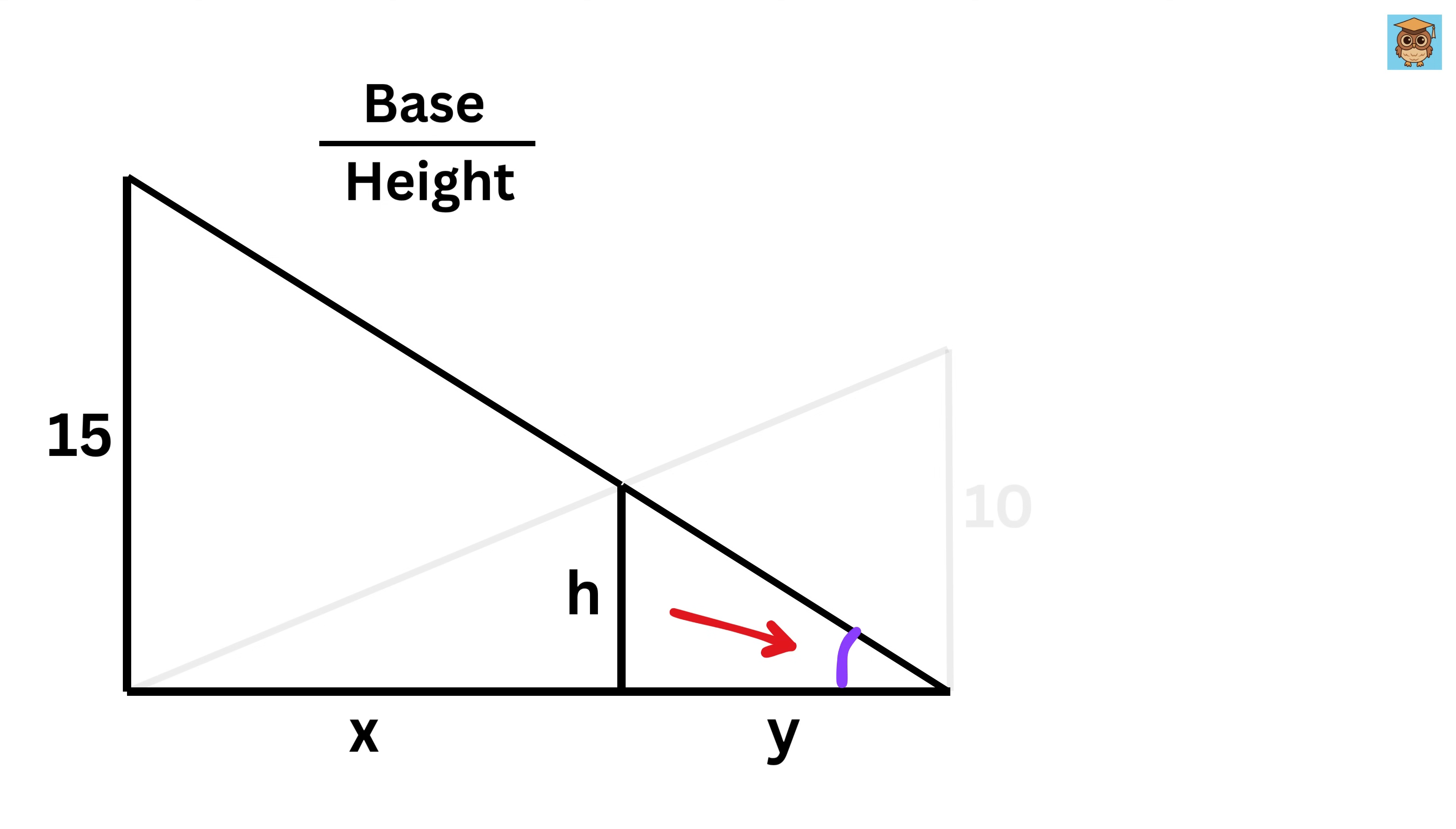So, the ratio base over height of both the triangles will be equal. This means that this base, or X plus Y, over height, or 15, will be equal to the base of this triangle, or Y, over this height, or H.